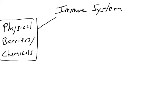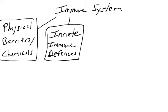In the immune system, we have a lot of layers of defenses. Initially, we talked about the physical and chemical barriers to infection. If you could stop pathogens from invading your body, you wouldn't need an immune system. The physical and chemical barriers are good, but they're very imperfect, so pathogens usually pass those barriers.